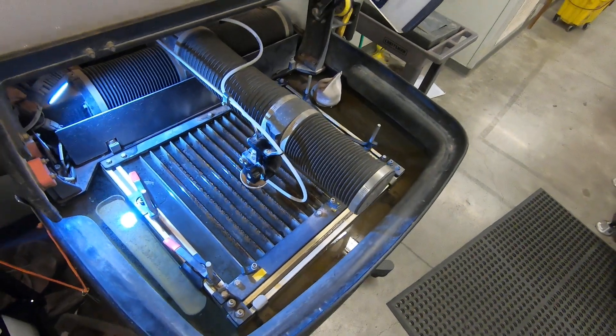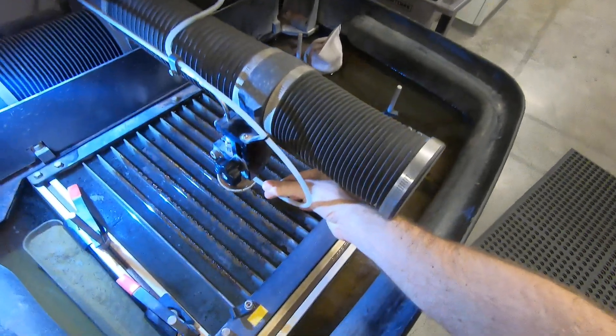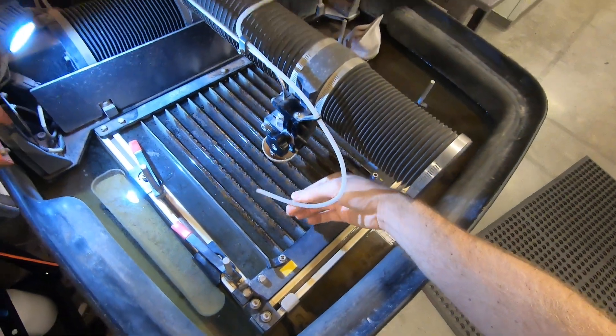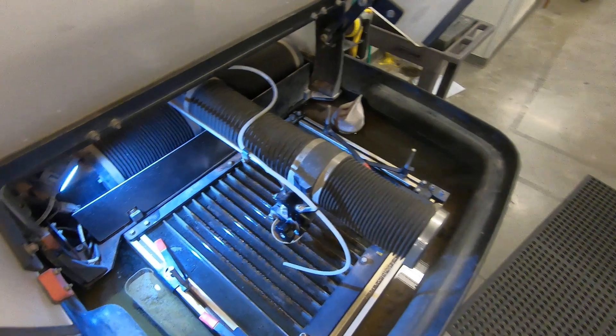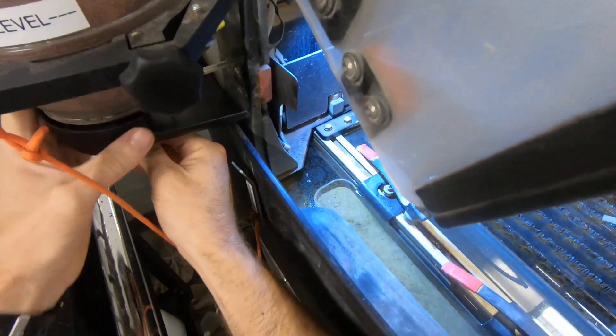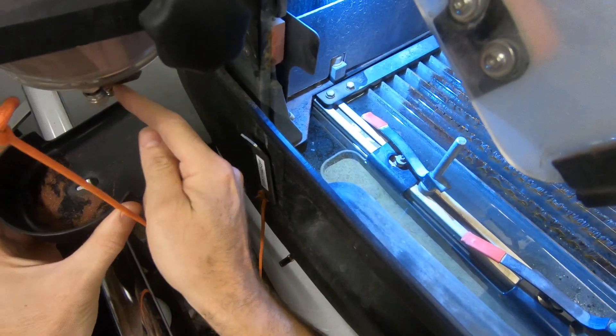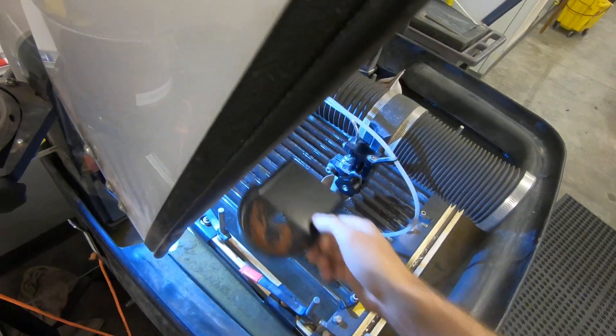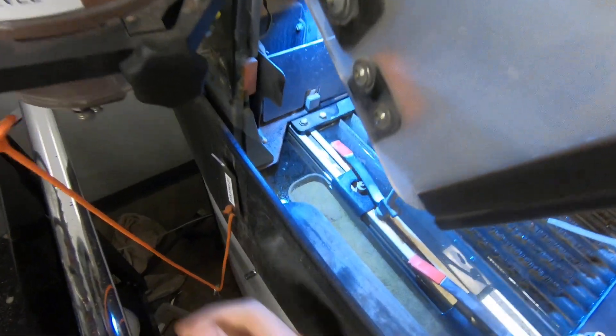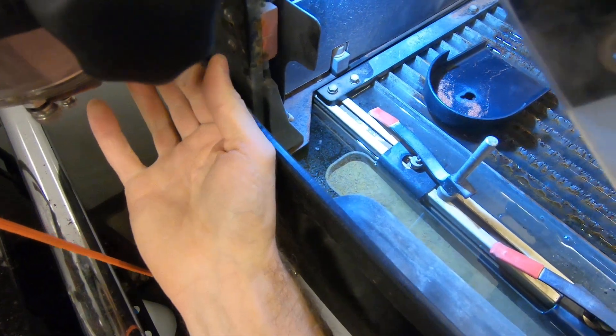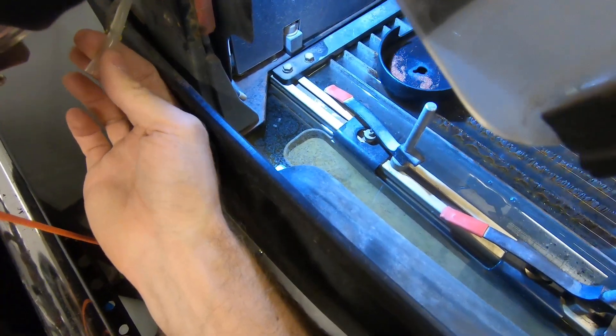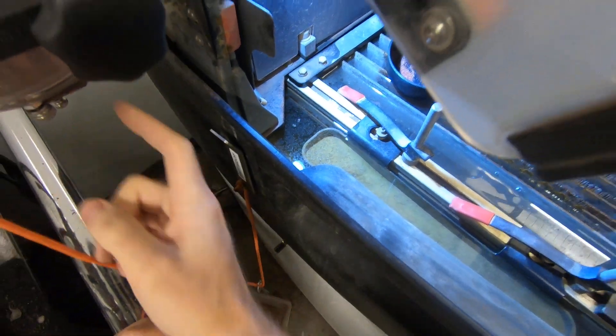To recover this clog, you need to unplug the abrasive feeder tube from the nozzle area and over here on the hopper. I'm going to unscrew, but not all the way, this little thumb screw. I'm going to put this in here, take out the abrasive tube from the hopper.